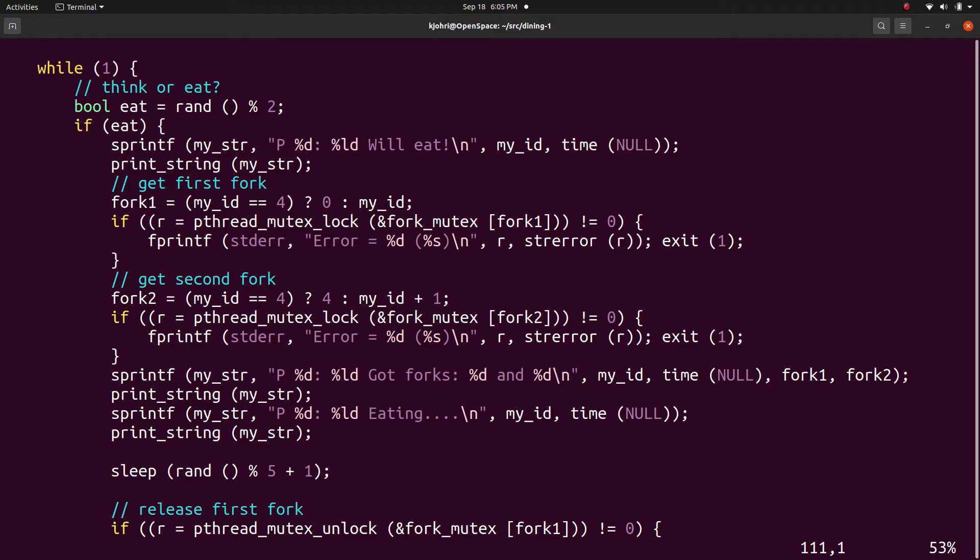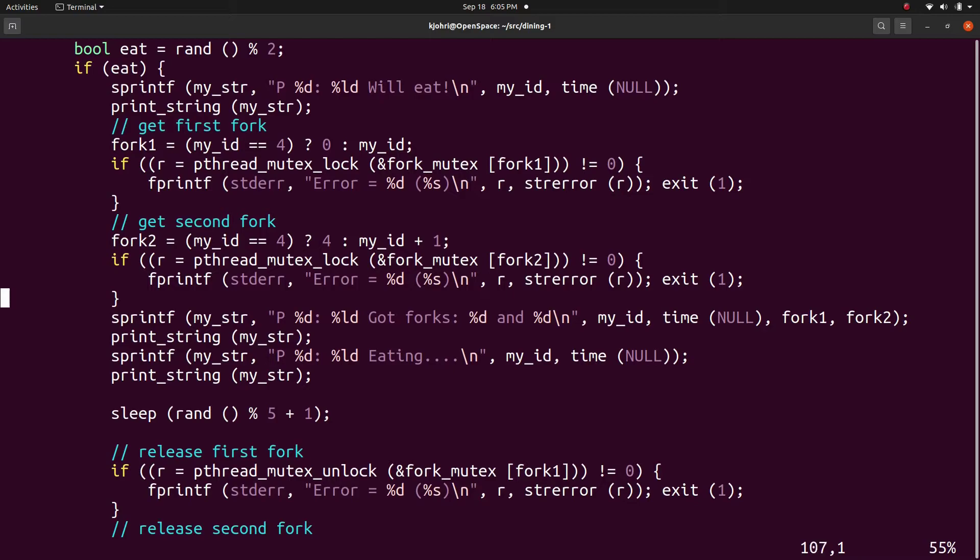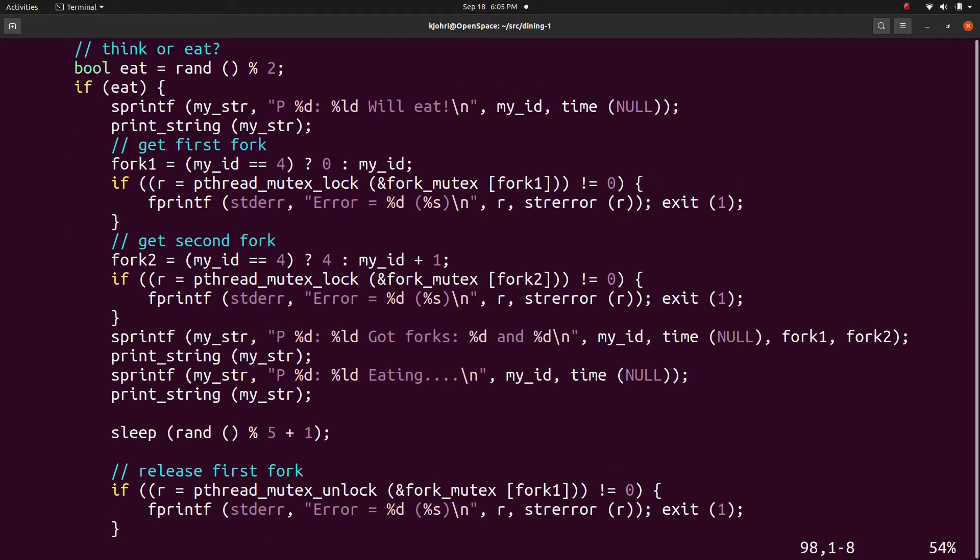If the philosopher decides to eat, he or she acquires the first fork which has the same id as philosopher id for philosophers 0, 1, 2 and 3. For philosopher 4, the first fork to be acquired is fork 0. Once the first fork is acquired, the philosopher tries to acquire the second fork.